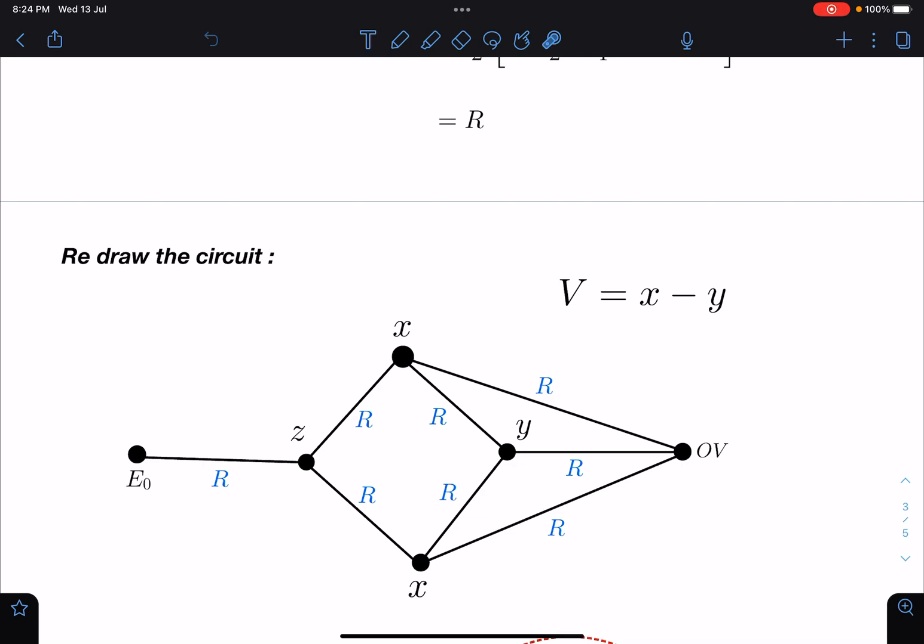So we have to calculate this voltmeter reading. By symmetry I can say if this is at zero volt and this is at E naught volt, in the question it is given V naught, so V naught or E naught anything is fine. If this is x, this will be x, these are the node potentials, and this will be something else I'm calling it as y, and this is z. So we have to find the value of x minus y in this case.